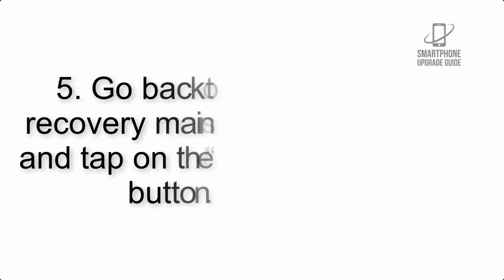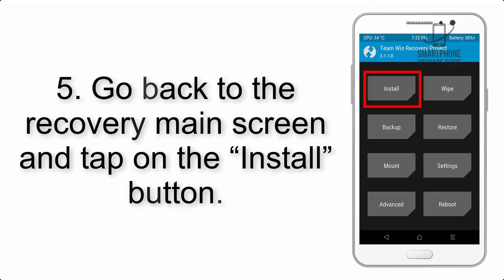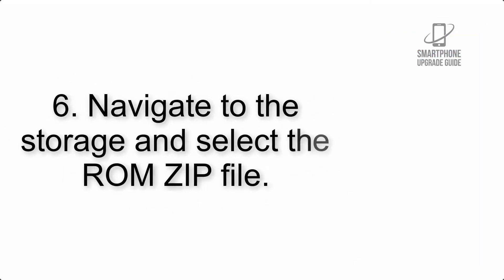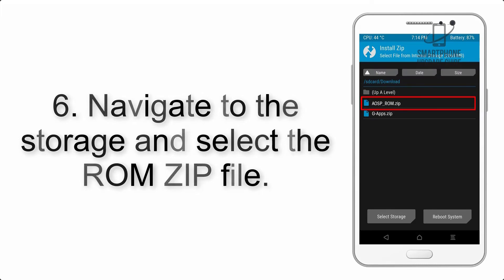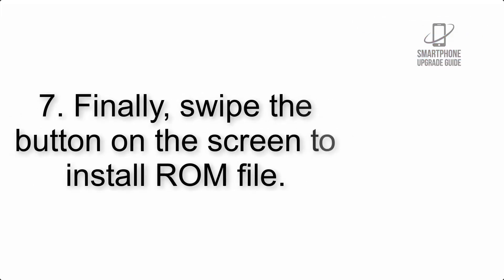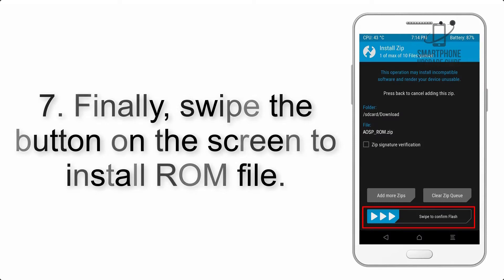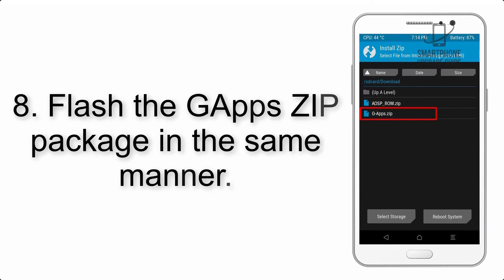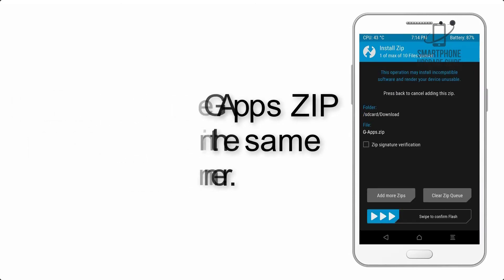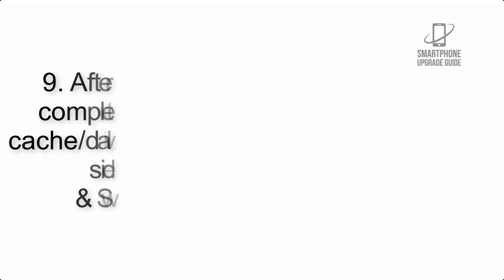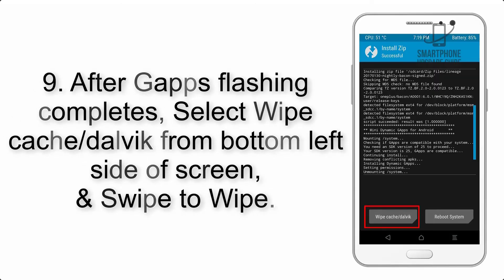Step 5: Go back to the recovery main screen and tap on the Install button. Step 6: Navigate to the storage and select the ROM zip file. Step 7: Swipe the button on the screen to install the ROM file. Step 8: Flash the GApps zip package in the same manner.